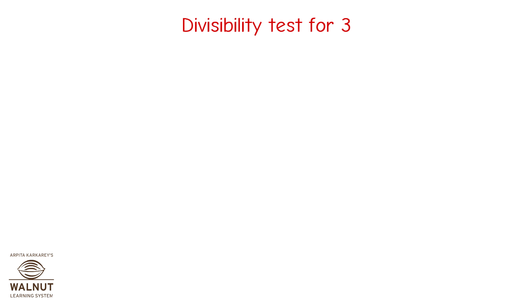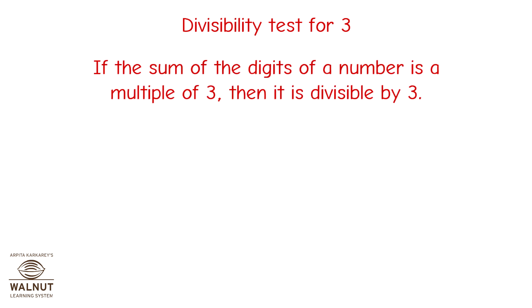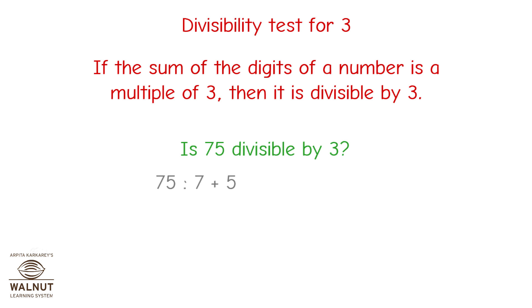Divisibility test for 3. We can say that if the sum of the digits of a number is a multiple of 3, then the number itself is a multiple of 3. Is 75 divisible by 3? What is the sum of the digits? It is 12. 12 is a multiple of 3, so 75 is divisible by 3.